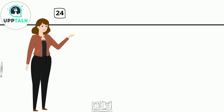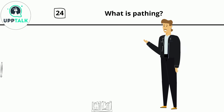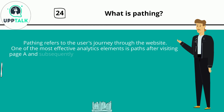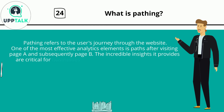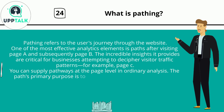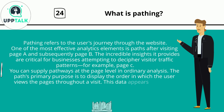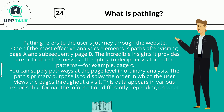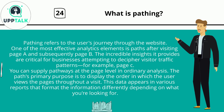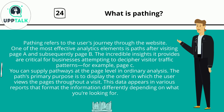Question 24: What is pathing? Pathing refers to the user's journey through the website. One of the most effective analytics elements is paths — for example, after visiting page A and subsequently page B. The incredible insights it provides are critical for businesses attempting to decipher visitor traffic patterns, such as page C. You can supply pathways at the page level in ordinary analysis. The path's primary purpose is to display the order in which the user views pages throughout a visit. This data appears in various reports that format the information differently depending on what you're looking for.